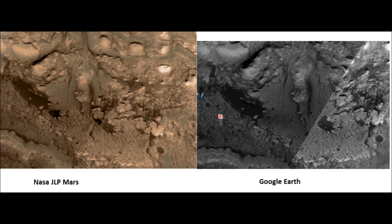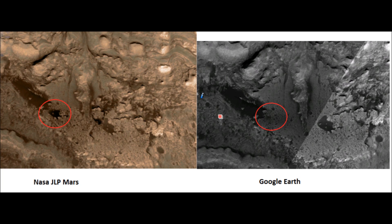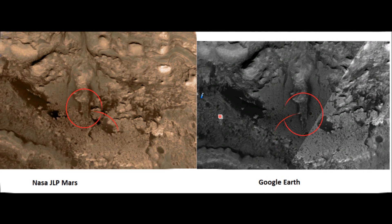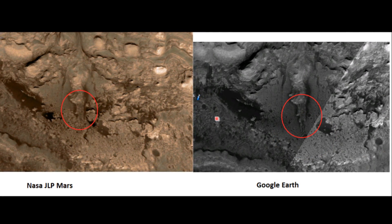First, you can see there's a water formation which Sunsflare was talking about in previous videos. There are two identical craters — both duplicated — the other is a little bit larger. But on Google Earth, you cannot see this black formation. What it is, I don't know.